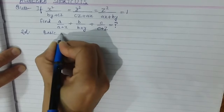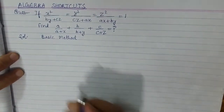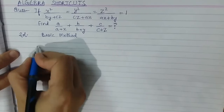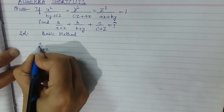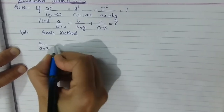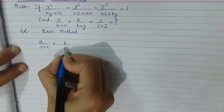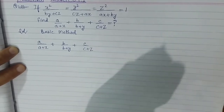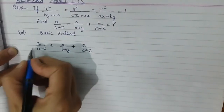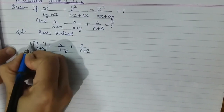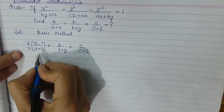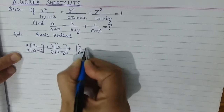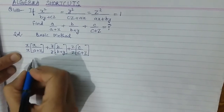Let us start with the basic method. We need to calculate the value of the expression: a/(a+x) + b/(b+y) + c/(c+z). We will start by multiplying and dividing the first term by x/x, for the second expression we multiply and divide by y/y, and for the third expression we multiply and divide by z/z.